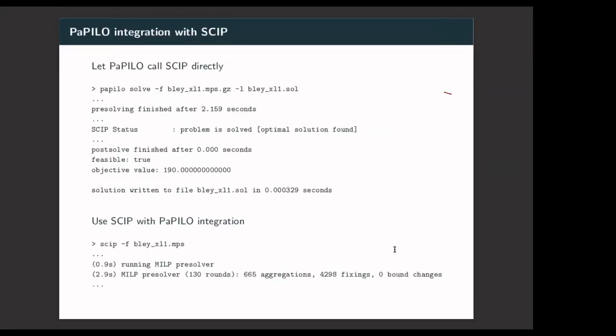PAPILO can call SCIP directly and also write out the solutions. It will then first pre-solve the MILP, subsequently call SCIP or SoPlex, and finally perform the post-solve operation. Also there is SCIP 7, the integration with PAPILO directly. There is some output when you run SCIP during pre-solving where it says running MILP pre-solver, which is when SCIP will be calling PAPILO and perform pre-solve on the MILP program.